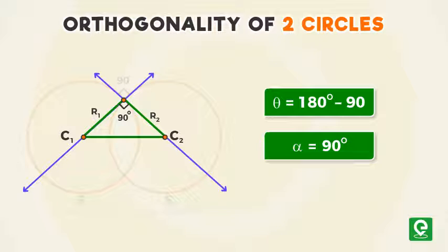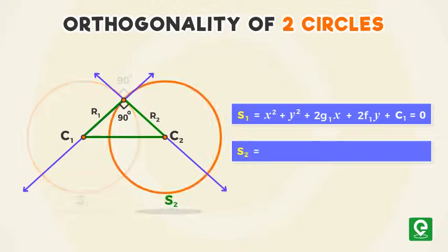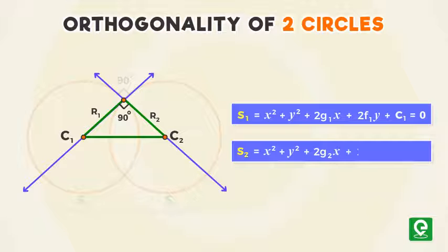The angle between corresponding normals should be 180 minus 90, that is 90 degrees, which means the normals of the two circles are also perpendicular to each other. Let the equation of the two circles be S₁ = x² + y² + 2g₁x + 2f₁y + c₁ = 0 and S₂ = x² + y² + 2g₂x + 2f₂y + c₂ = 0.